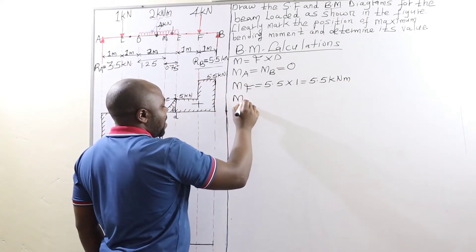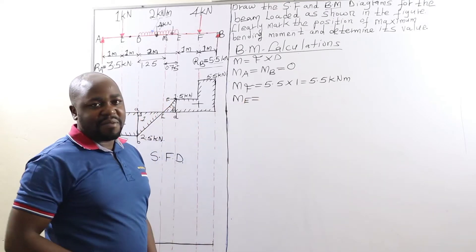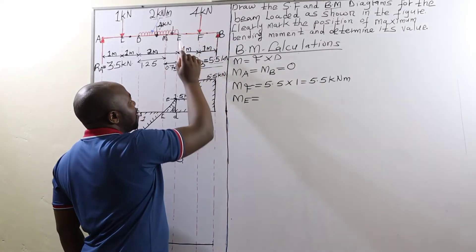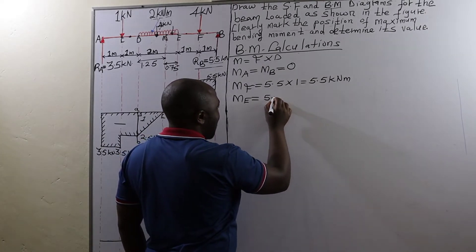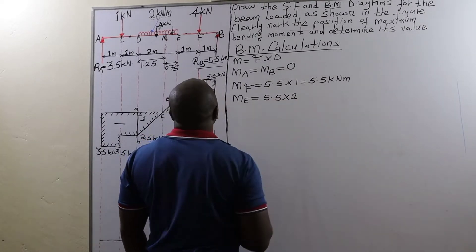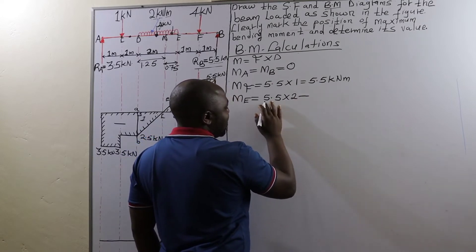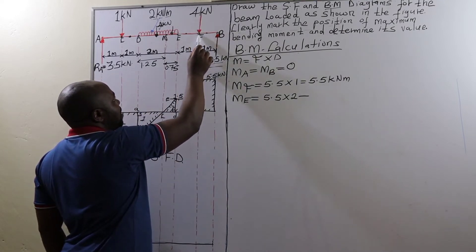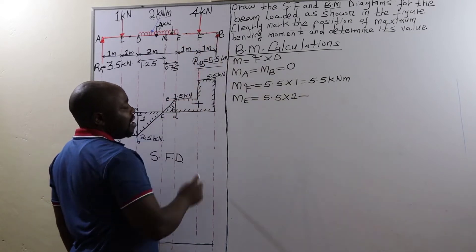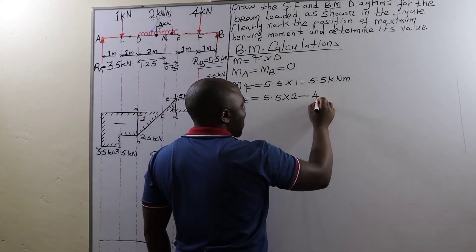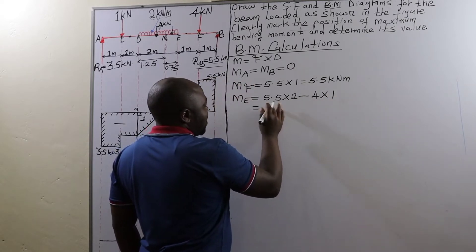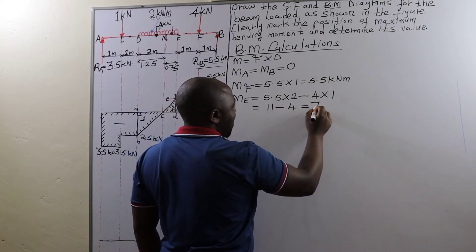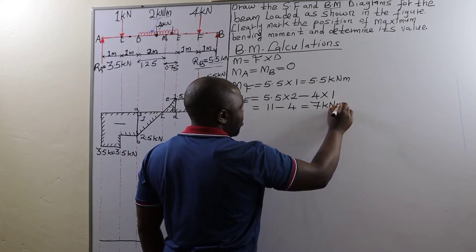Then we have bending moment at point E. The bending moment at point E is going to be 5.5 kilonewtons times the distance from B to E, which is 2 meters. Then we subtract a clockwise moment of 4 kilonewtons point load at point F times the distance from F to E, which is one meter. Therefore we have 5.5 times 2, that is 11, minus 4 times 1, that is 4, to give us a moment of 7 kilonewton meter.